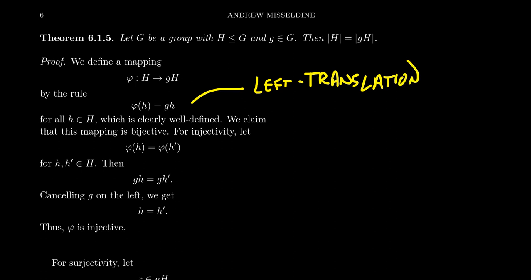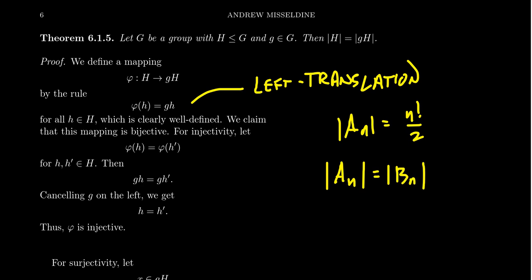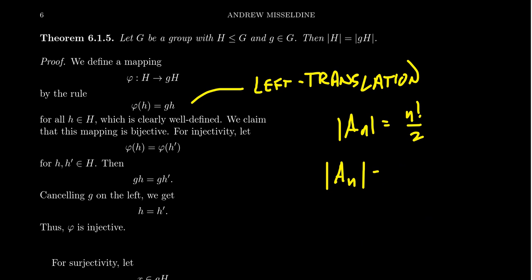We saw this before when we proved that the order of the alternating group equals n factorial over 2. The basic argument was hinged upon the idea that the number of even permutations was equal to the number of odd permutations. We showed there was a bijection from even permutations to odd permutations, and we did it using right translation — we took an even permutation σ and mapped it to σ times (1 2), which would be an odd permutation. That was right translation, and we argued that right translation is a bijection.